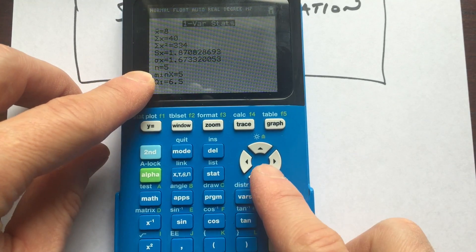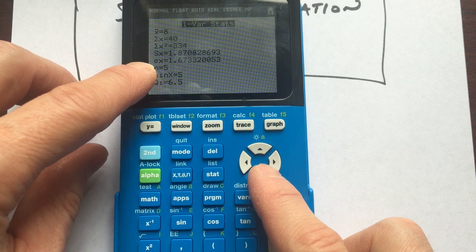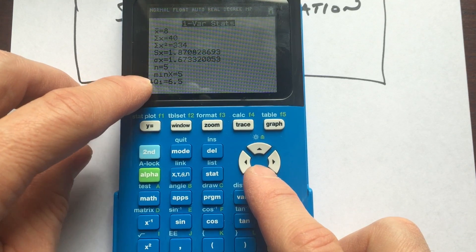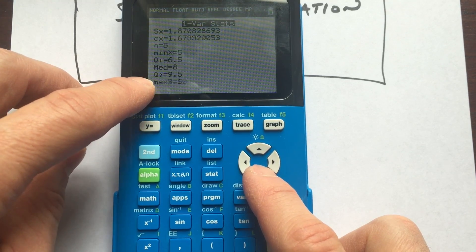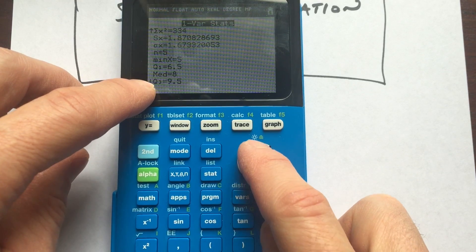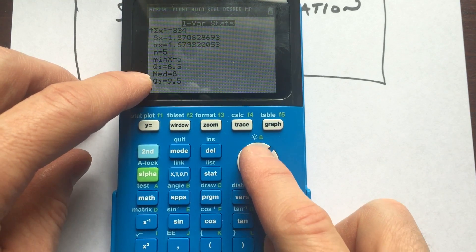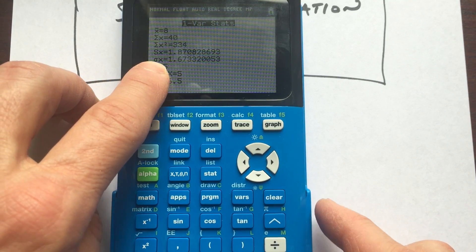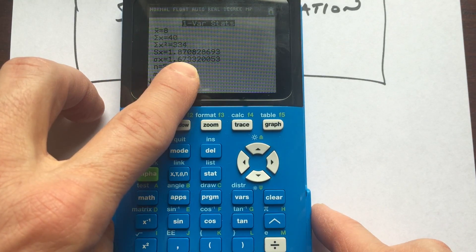And if you arrow down, there's some other interesting data as well. There's the number of data points five, n equals five, the minimum, the first quartile, the median, the third quartile, the maximum. So there's a lot of information here. But the one that we're interested in is this one here, sigma, and that gives you the standard deviation.